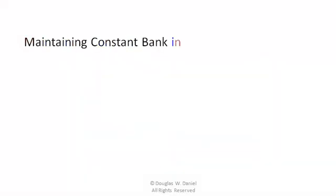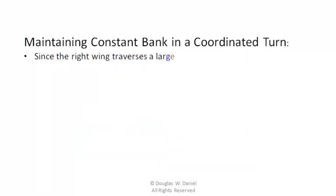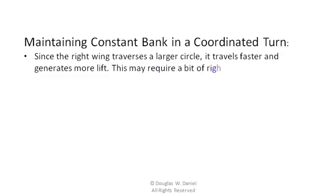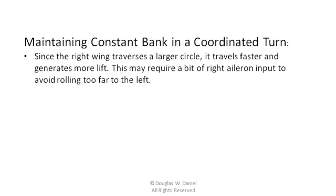Maintain constant bank in a coordinated turn. Since the right wing traverses a larger circle, it travels faster and generates more lift. This may require a bit of right aileron input to avoid rolling too far to the left.